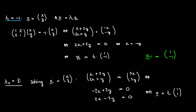So our eigenvectors corresponding to lambda₂ = 3 are all vectors of the form t*(1, 1). We have a choice for our x2, and we just need it to be linearly independent with x1. Taking t equal to 1, we get x2 equal to (1, 1).